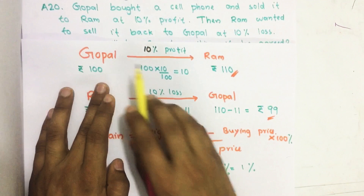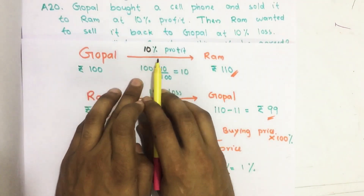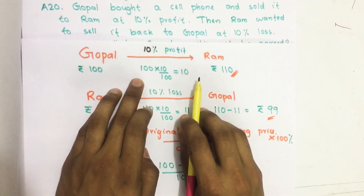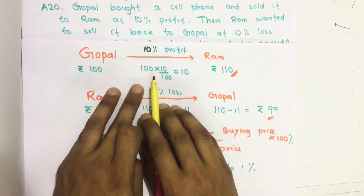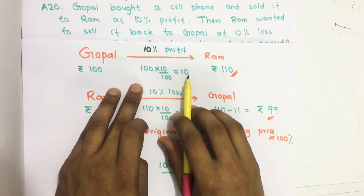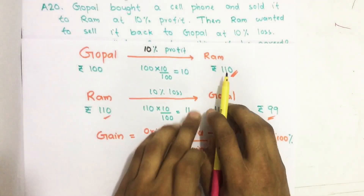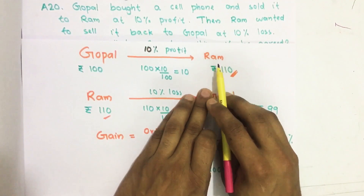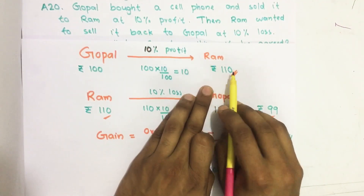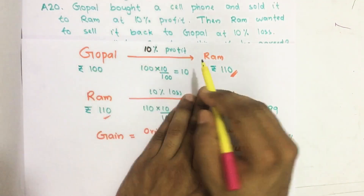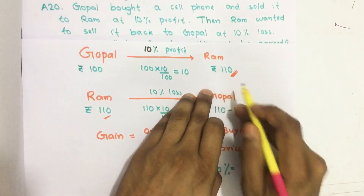Then Gawbal sold it to Ram at 10% profit. 10% of 100 equals 100 into 10 by 100, which gives us 10. So the price paid by Ram equals Rs. 100 plus 10, which is equal to Rs. 110.